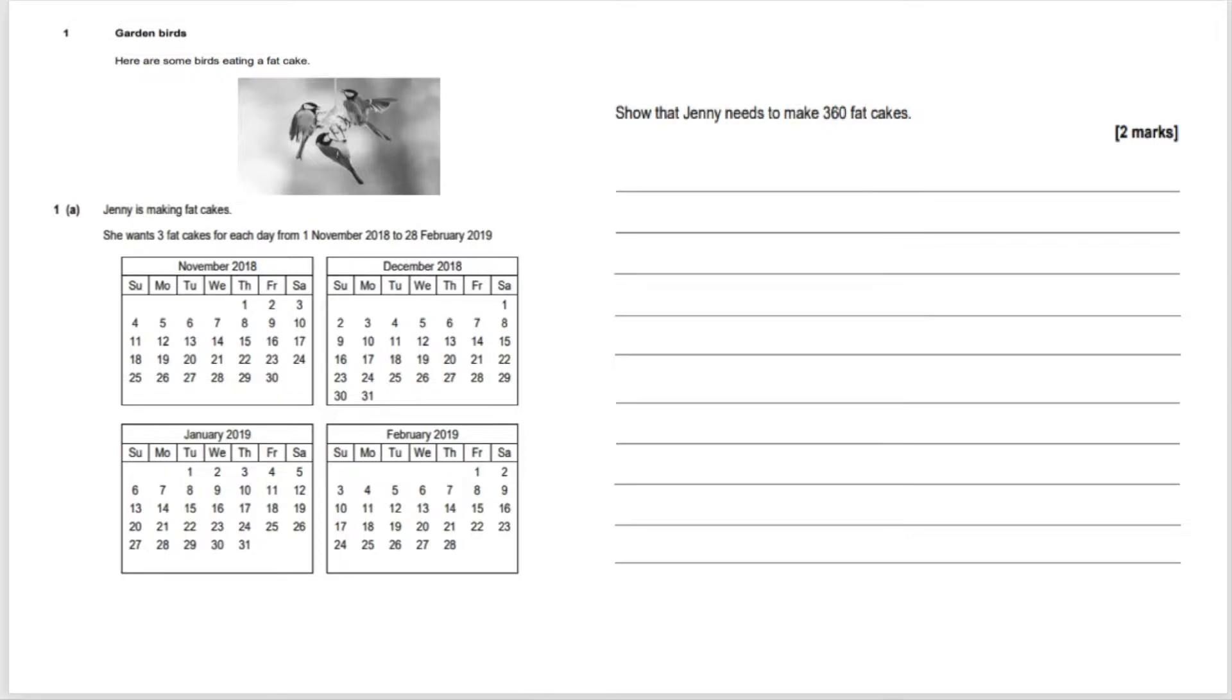What the examiner is looking for is that you're able to add up all the days in these months. And then, because she wants three fat cakes for each day, the examiner is looking to see whether you know how to multiply this total to get the answer.